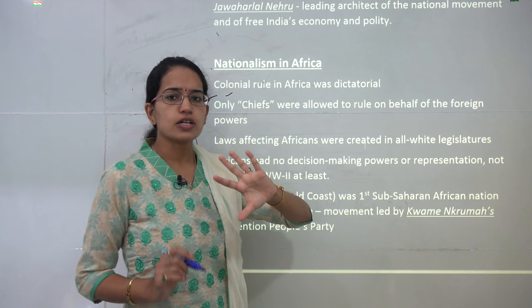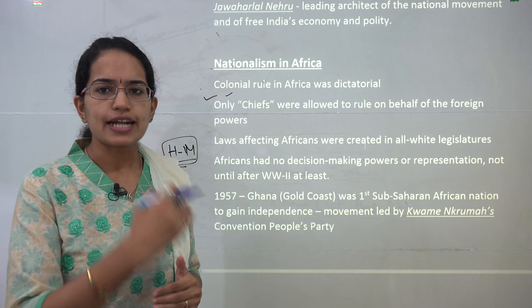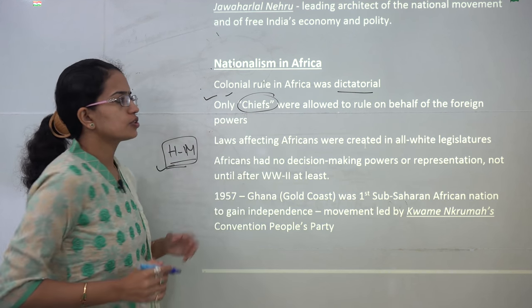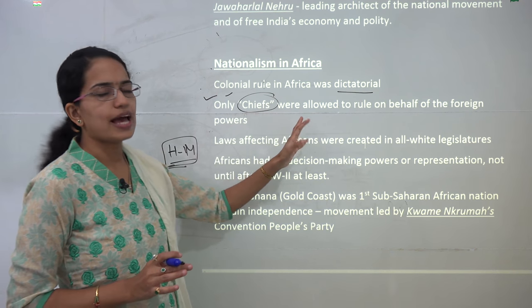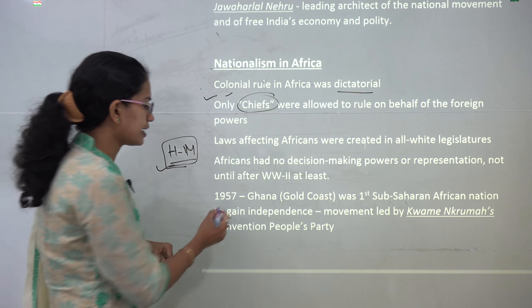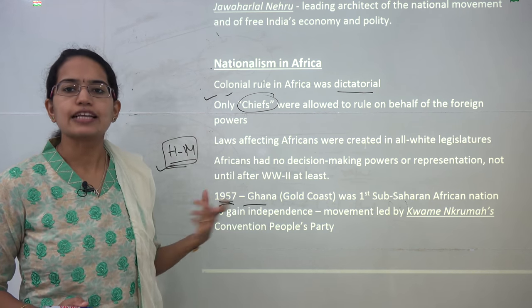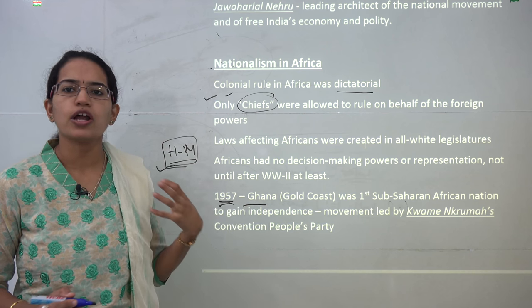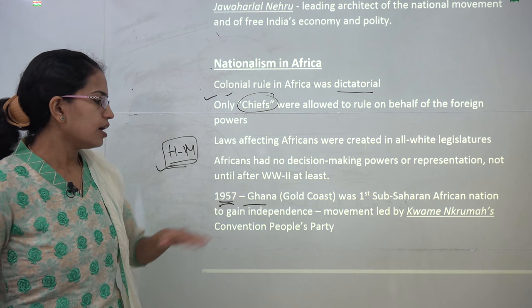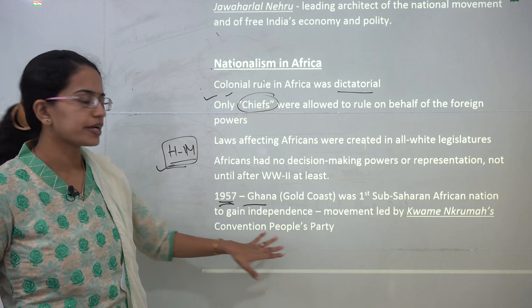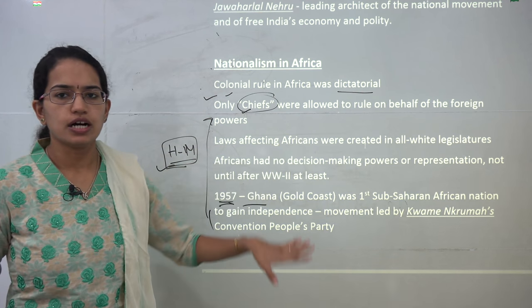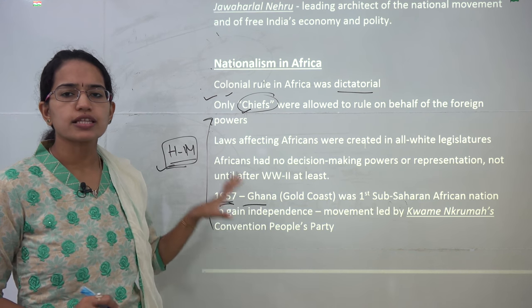During that time, nationalism was also emerging in Africa. Africa until then was under dictatorial rule where only chiefs were allowed to rule on behalf of foreign powers, and all the legislature was white with blacks having no representation. In Ghana in 1957, a movement started, and Ghana (also known as Gold Coast) became the first sub-Saharan African nation to attain independence. This movement was under Kwame Nkrumah's Convention People's Party, which spoke against the rule of chiefs and the all-white legislature, bringing independence to Ghana.